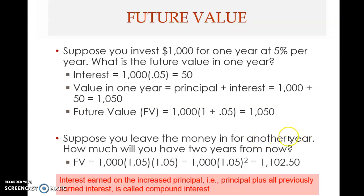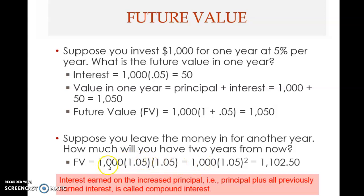Now let's extend this example. Suppose you leave the money in for another year — two years total instead of one. How much will you have two years from now? Using the same method, the principle at the end of year one is one thousand and fifty. So you compute one thousand and fifty multiplied by one plus five percent. Since one thousand and fifty equals one thousand times 1.05, this becomes one thousand times 1.05 times 1.05 — which is 1.05 squared.